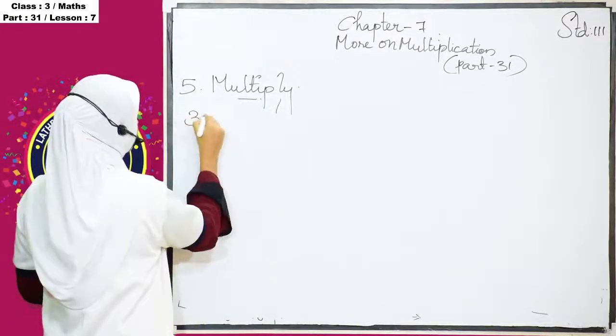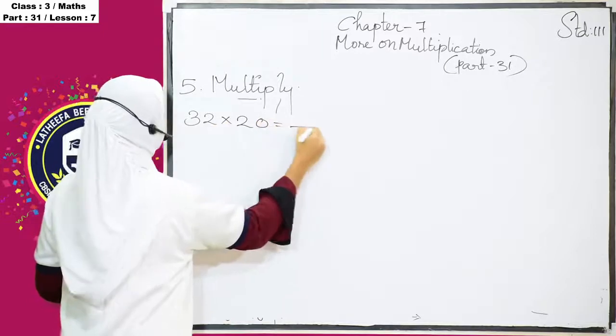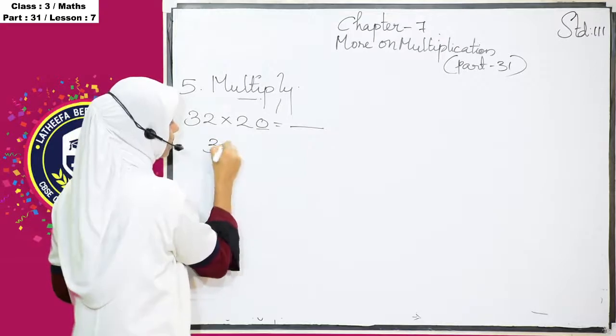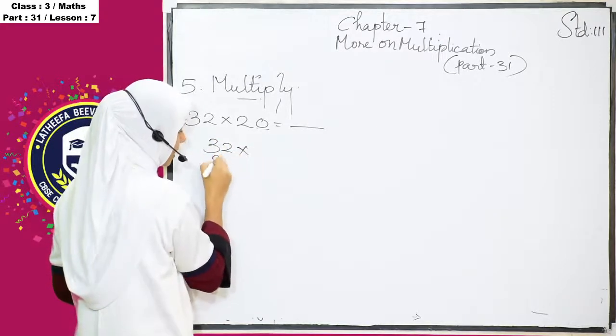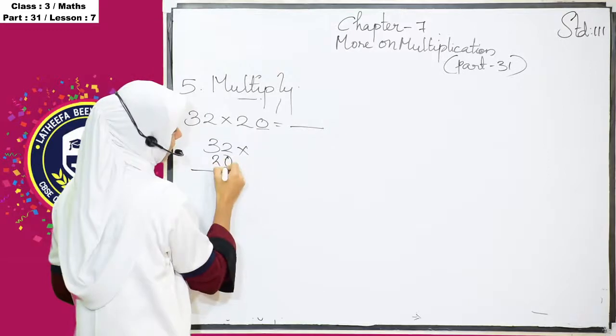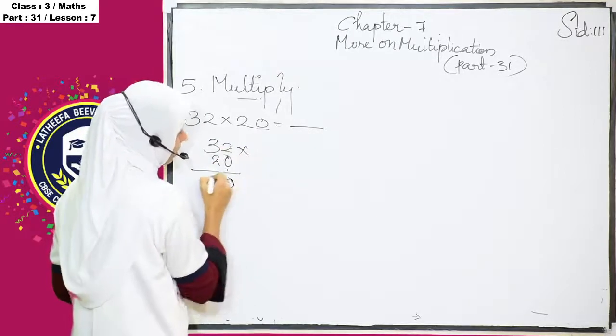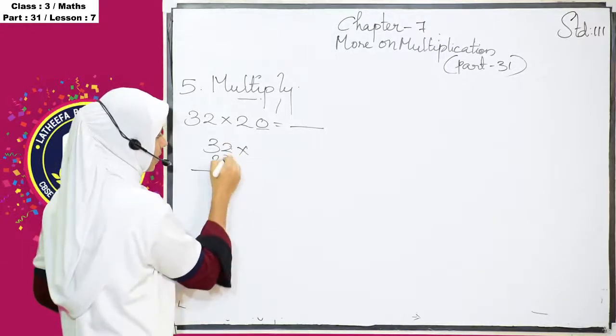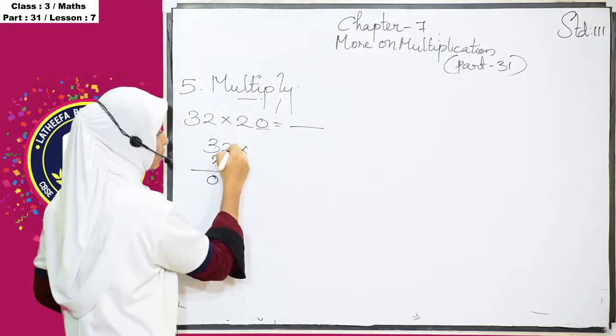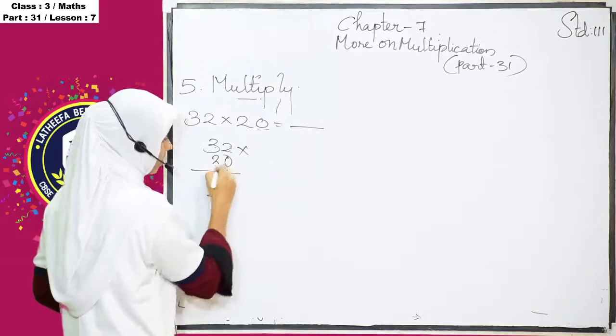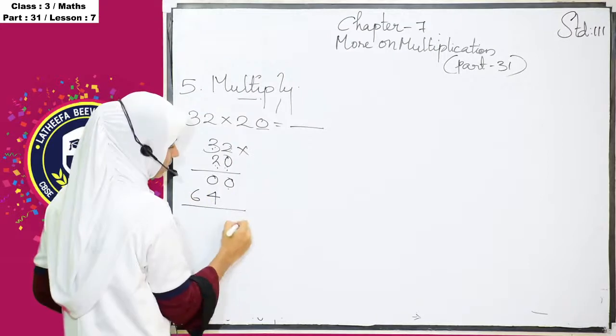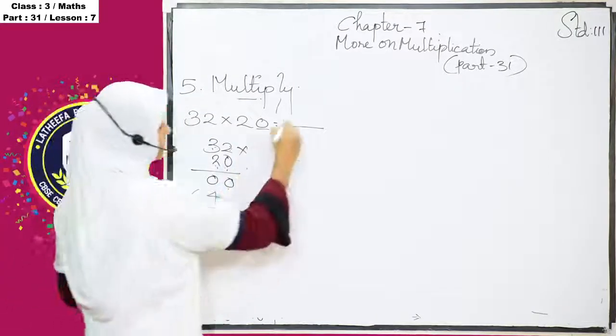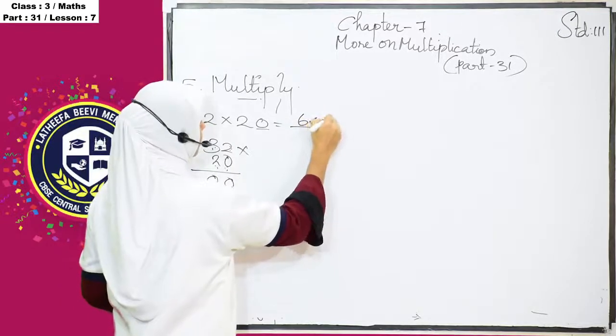Again, 32 into 20 is equal to dash. 32 into 20, we will get 0 as the answer. 0 into 2 is 0, 0 into 3 is 0, 2 into 2 is 4, 2 into 3 is 6. So, 0, 4, 6, 640. So, its answer is 640. Next question.